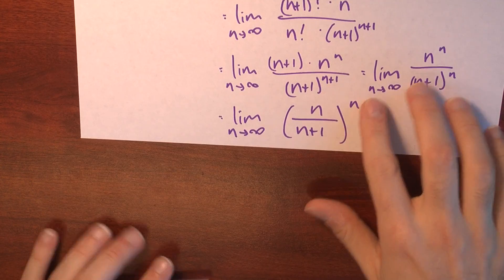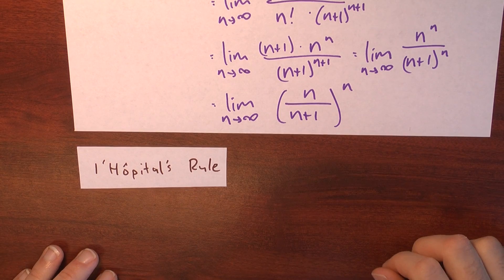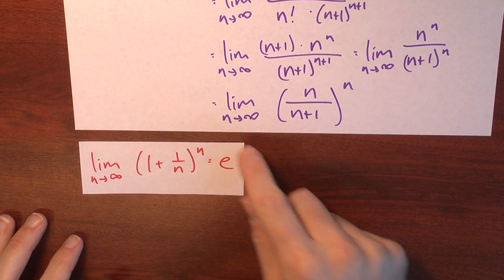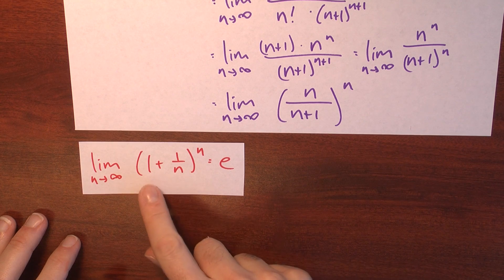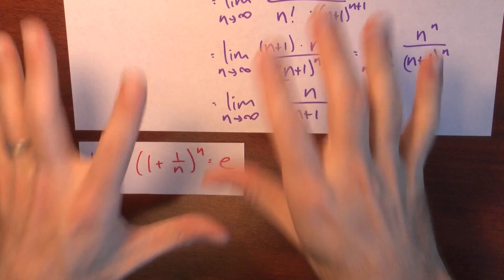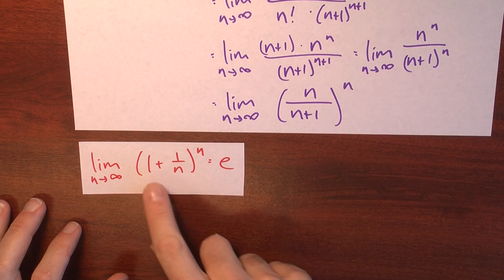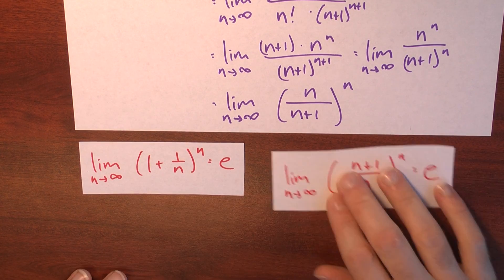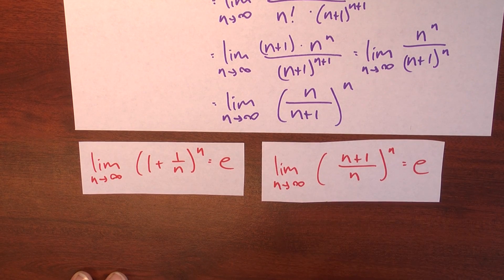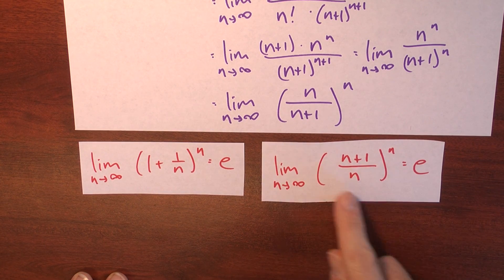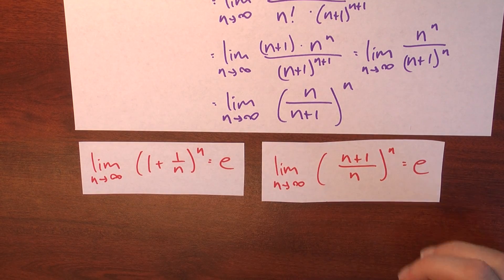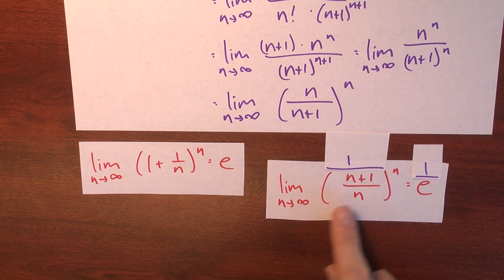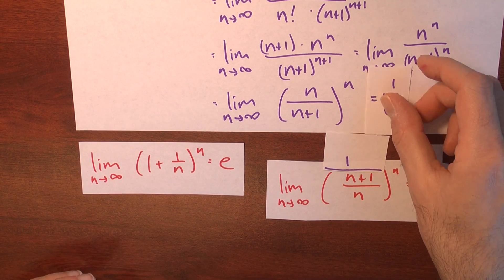But how do I evaluate the limit? To analyze this, if you really love L'Hôpital's rule, you could apply it. I don't really like L'Hôpital's rule that much, so instead I'm going to recall a useful fact — in fact, this might have been how you define the number e. The limit as n approaches infinity of (1 + 1/n)^n is e. Now, 1 + 1/n equals (n+1)/n, which means the limit of ((n+1)/n)^n as n approaches infinity is e. Using the fact that the limit of a reciprocal is the reciprocal of the limit, the limit of (n/(n+1))^n is 1/e.